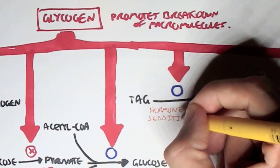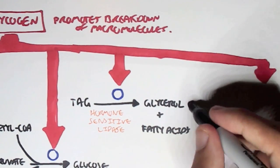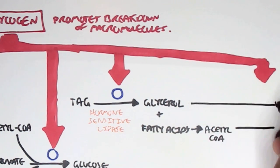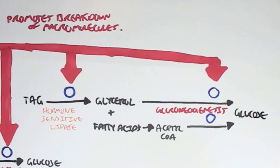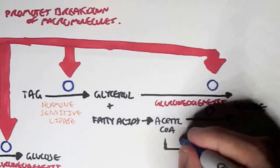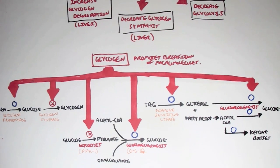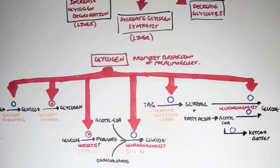Glucagon stimulates the conversion of fatty acids to acetyl-CoA, and then glucagon stimulates gluconeogenesis — the conversion of glycerol and acetyl-CoA to glucose. Importantly, glucagon also stimulates the synthesis of ketone bodies to provide energy to different organs during the fasted state. That concludes the video on glucagon. I hope you enjoyed it. Please like, comment, and share. Thank you.